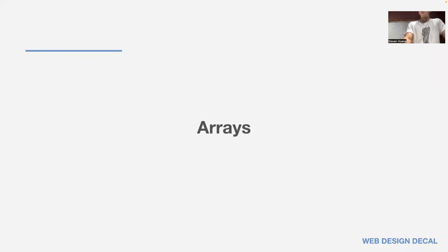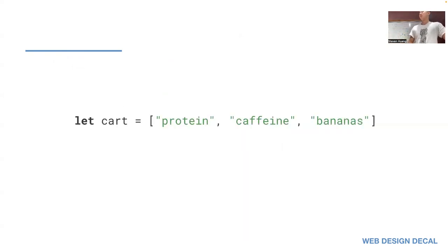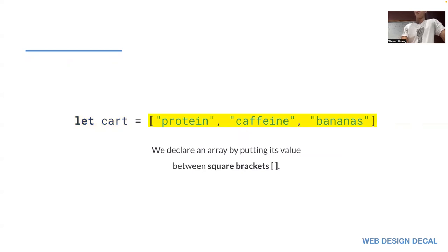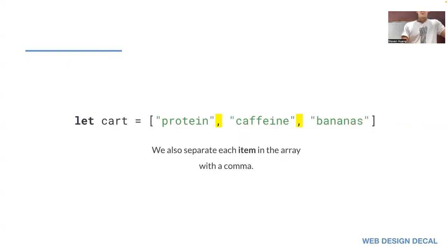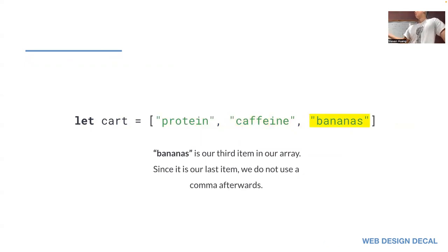Now we get to new content: arrays. We can think of arrays as a list of values that we can use to represent multiple objects in one placeholder. For example, a shopping cart with protein, caffeine, and bananas. We declare variables the same way as before — 'let cart' — and on the right side, this new syntax: we declare an array by putting values within square brackets, separating each item with a comma.